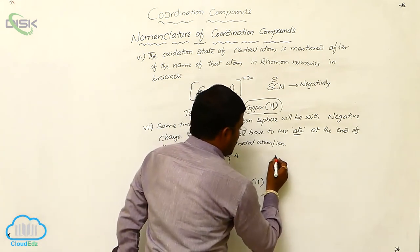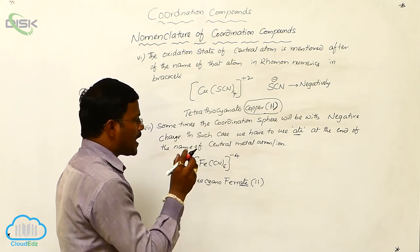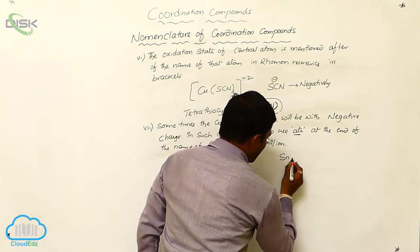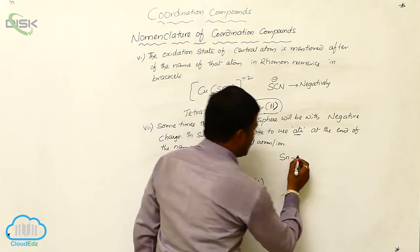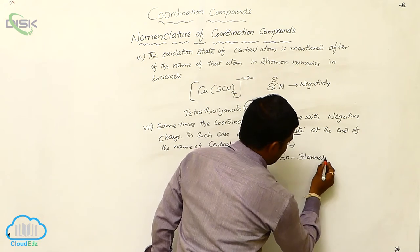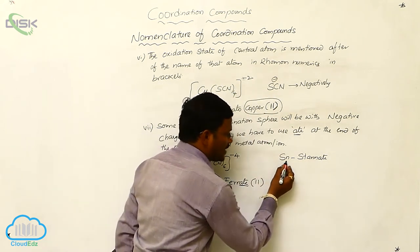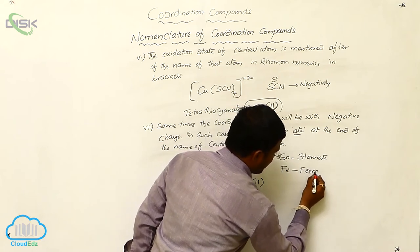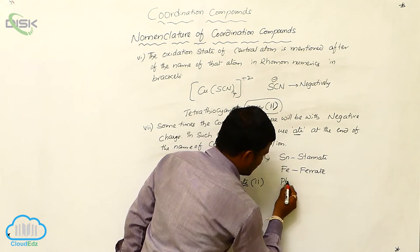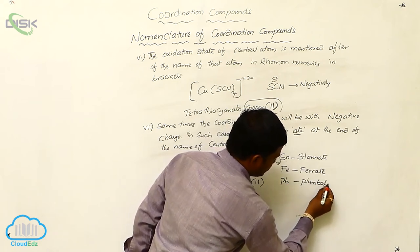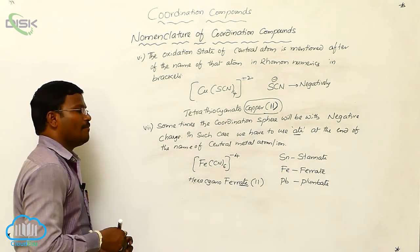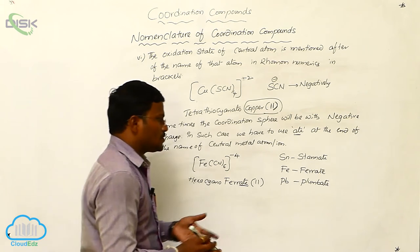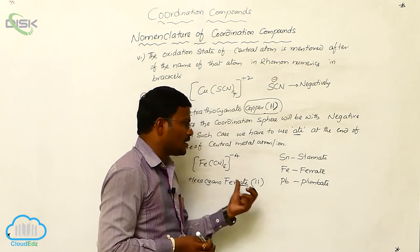Sometimes the names for the central metal atoms are provided based on their origin letters. For example, Sn is tin but during nomenclature it is used as 'stannate', from Latin. Similarly, if iron is present it is called 'ferrate', and if lead is present it is called 'plumbate'. Some metals require us to follow their origin letters or origin words during nomenclature.